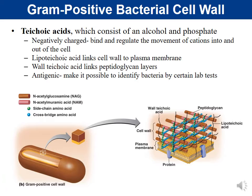Now we're going to compare and contrast gram-positive and gram-negative bacterial cell walls. Gram-positives have a very thick layer of peptidoglycan, and in that peptidoglycan there's what's called teichoic acids. These teichoic acids consist of an alcohol and a phosphate.